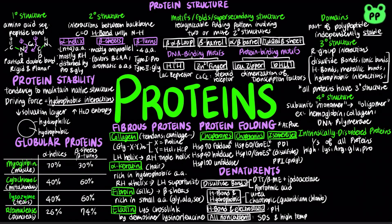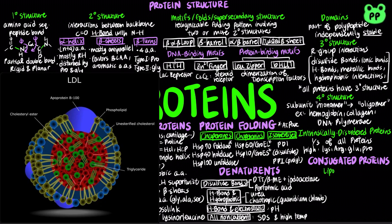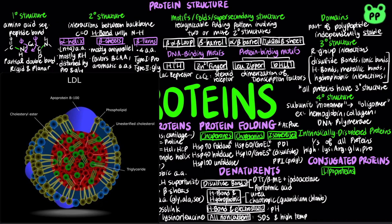Conjugated proteins contain chemical groups other than amino acids, including lipoproteins such as low-density lipoprotein, which transports lipids from the liver to peripheral tissues, and high-density lipoprotein, which transfers lipids from tissues to the liver.